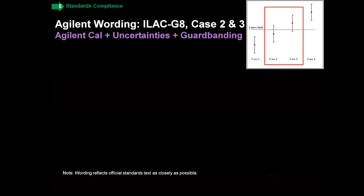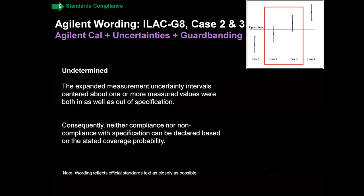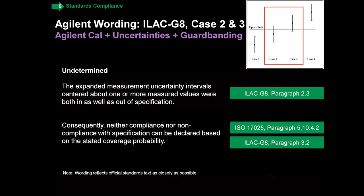There is also a service called 'Agilent Cal Plus Uncertainties Plus Guard Banding,' and this one gives pass or fail — or in the case of either case two or case three, where you measure just inside or just outside but the uncertainty crosses, the standard says you should really call that undetermined, so you can't say whether it passed or failed. We do report the measurement result, so any customer wanting to know 'was I in or was I out?' will be able to see that on our measurement report, but in terms of the designation the standard says to report undetermined, so we do with this service.